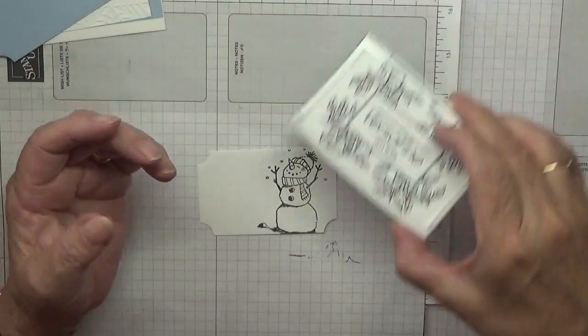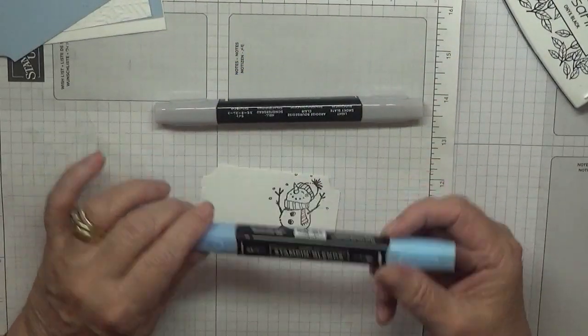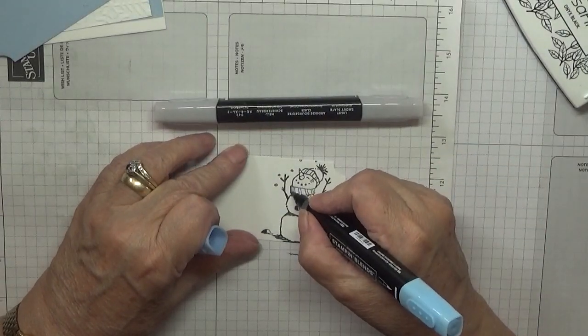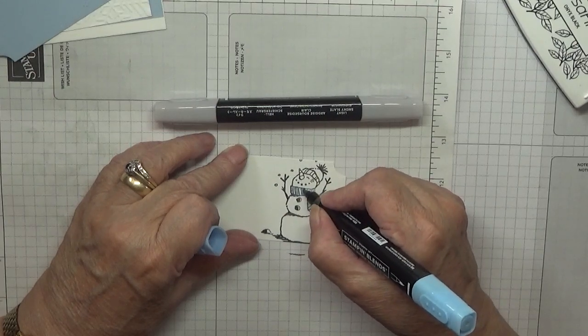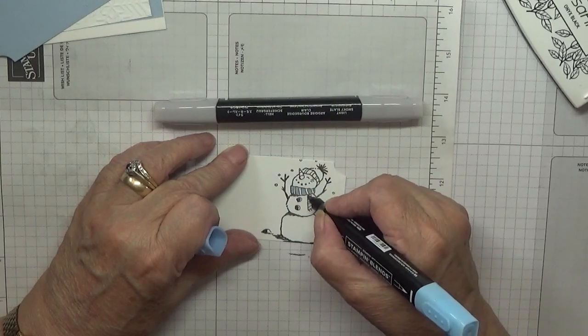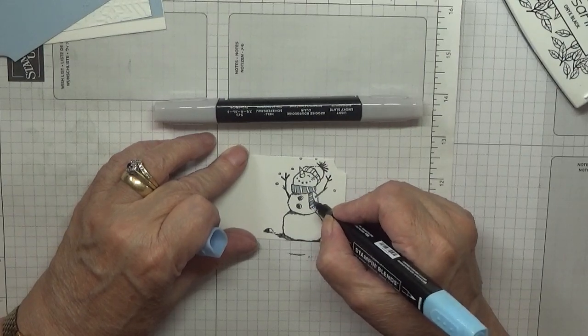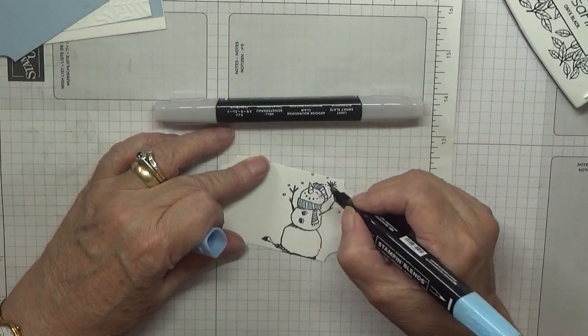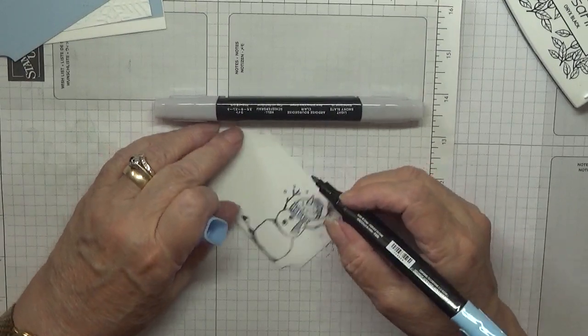Nice. Get rid of that. And I'll color this in first before I use that, in case I smudge it. Right, I've got seaside spray and we're just going to color this in. Dead easy, just every other one, just down with this hat.